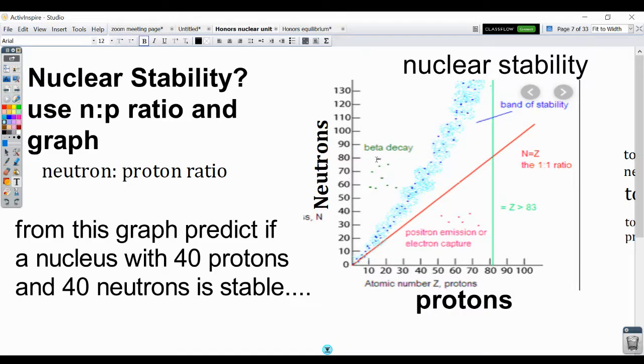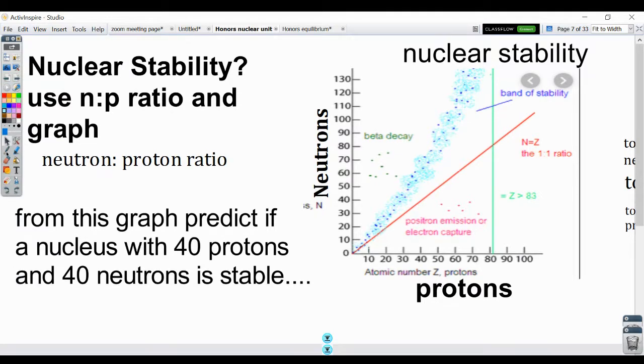If I have nuclei up here where I have essentially more neutrons, I have too many neutrons, I will have an unstable nucleus. And there's a type of decay, beta decay listed here for those types of atoms. If I have a nucleus that has too many protons, that would put me down here on the graph. I'd have more protons than I need. And that would be another type of emission or decay.